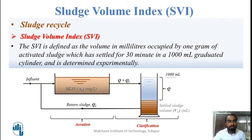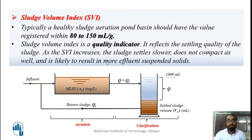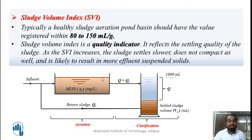Let us see the important nature of SVI so that we can maintain these parameters. SVI is mostly maintained between 80 to 150 ml per gram. It is a quality indicator — it reflects the settling quality of sludge. If SVI increases above 150 ml per gram, the sludge settles very slowly and does not compact well, causing most of the sludge to remain suspended in the effluent and transfer to the next unit — which we do not want. So we must maintain SVI between 80 to 150 ml per gram.